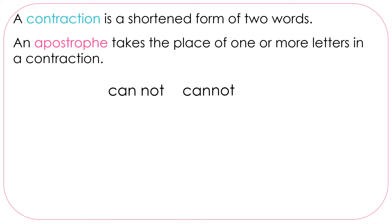Can and not. Together they can be the word cannot, or we can make the contraction can't. Notice that the apostrophe takes the place of the letters n and o.